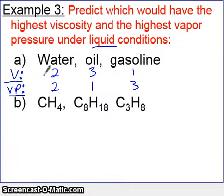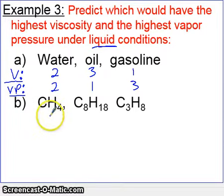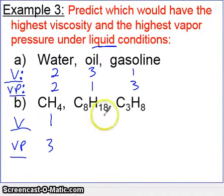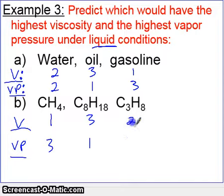For part B, comparing molecules by structure: the smallest molecule has the lowest viscosity and highest vapor pressure. The biggest molecule has the highest viscosity and lowest vapor pressure. The middle-sized molecule has intermediate values — ranked 2 on both viscosity and vapor pressure. This wraps up lesson 2 of unit 12.